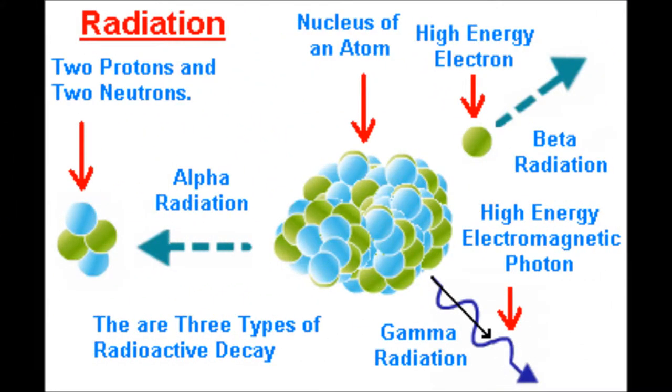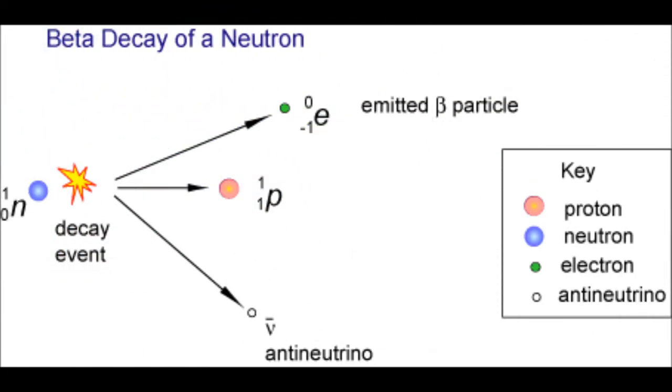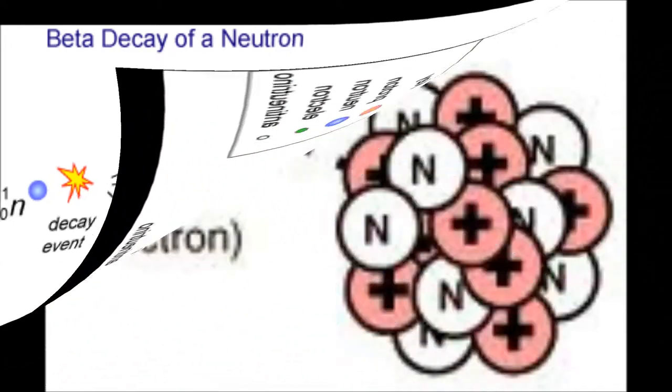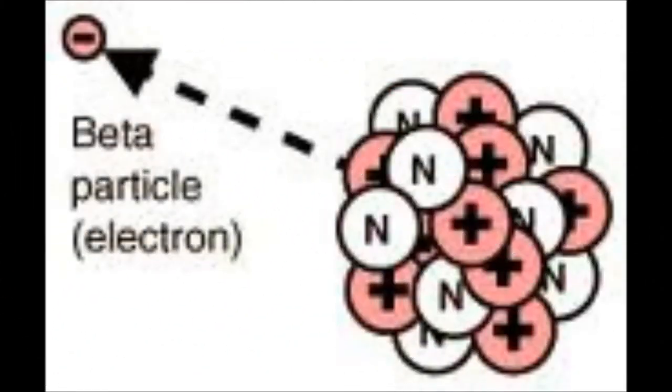Whilst having too many neutrons is classified as unstable, the beta emission process is put into place for cobalt-60. The beta emission process is when a neutron becomes a proton and an electron. The proton remains in the nucleus and the electron, which is now called a beta particle, is ejected from the atom.